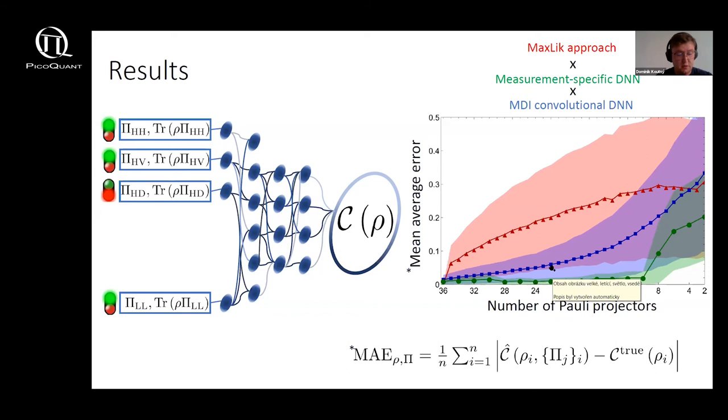The mean average error for now measurement device independent deep neural network is still lower than for the tomographic approach. But by erasing the information what projectors we are measuring a priori, the errors are higher than in the measurement specific approach.